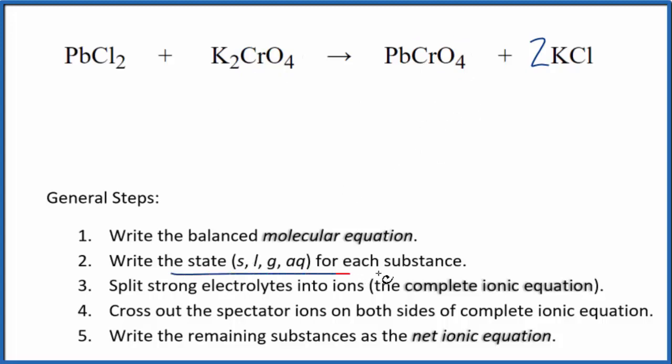Now we need to write the state for each substance. If we look lead 2 chloride up on a solubility table, we'll see that it's slightly soluble. Lead compounds often are either insoluble or slightly soluble. This is slightly soluble. We consider that to be insoluble with net ionic equations, so we're just going to write S. This will be a solid.